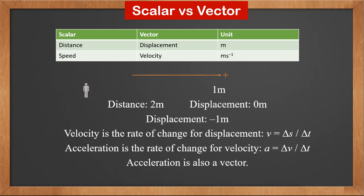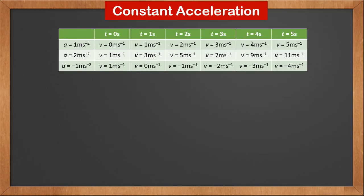Acceleration is also a vector. Its unit is meter per second squared. Sometimes, under not so stringent conditions, distance and displacement, speed and velocity, can be used interchangeably. Now let's look at constant acceleration in a straight line.